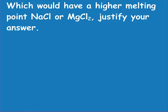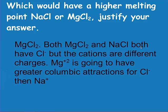Magnesium chloride has a higher melting point because magnesium has a higher charge than sodium, although they both have chloride ions. When magnesium has a higher charge, it causes a greater Coulombic attraction. Magnesium 2+ is going to have a greater Coulombic attraction for chlorine than sodium ion.